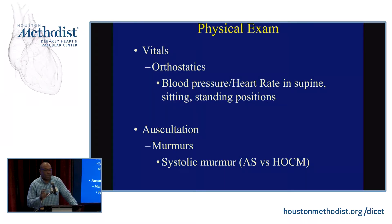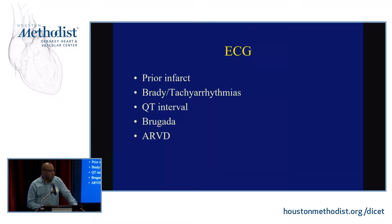On physical exam, orthostatic blood pressure measurement should be a routine part of your initial evaluation, as well as auscultation. The two most dangerous murmurs you don't want to miss are severe aortic stenosis and the murmur of HOCM. On EKG, look for prior infarcts, brady- or tachyarrhythmias, QTc prolongation, Brugada syndrome, or arrhythmogenic ventricular dysplasia.